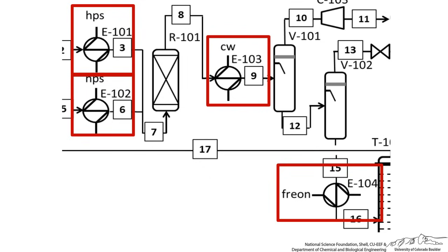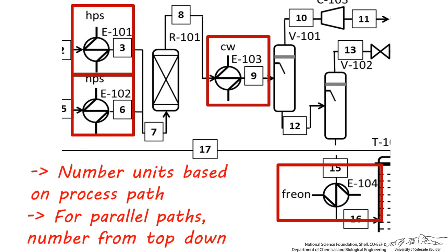Notice there's a bit of a judgment call you must make when numbering some of these units, since some of them may be parallel to each other. The general protocol is to number units based on the path of the process from starting materials to products. Trace the path of the process and number units of the same type based on their sequence from start to finish. For units which are part of parallel paths, give priority to equipment shown above other units in the diagram.